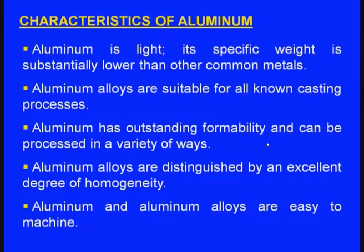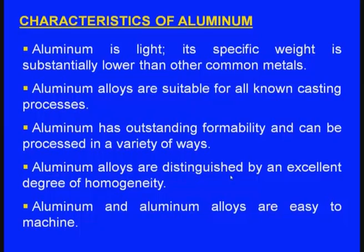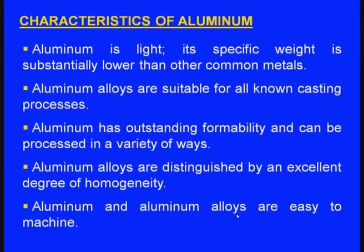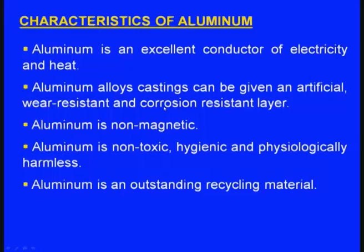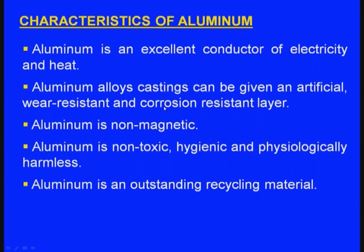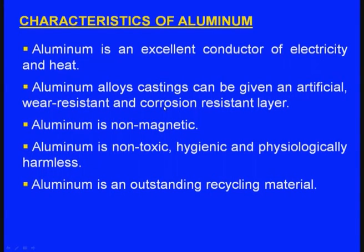Aluminum has outstanding formability and can be processed in a variety of ways. Aluminum alloys are distinguished by an excellent degree of homogeneity, meaning uniform composition everywhere. Aluminum and aluminum alloys are easy to machine; their machinability is good. Aluminum is an excellent conductor of electricity and heat. Aluminum alloy castings can be given an artificial wear-resistant and corrosion-resistant layer.